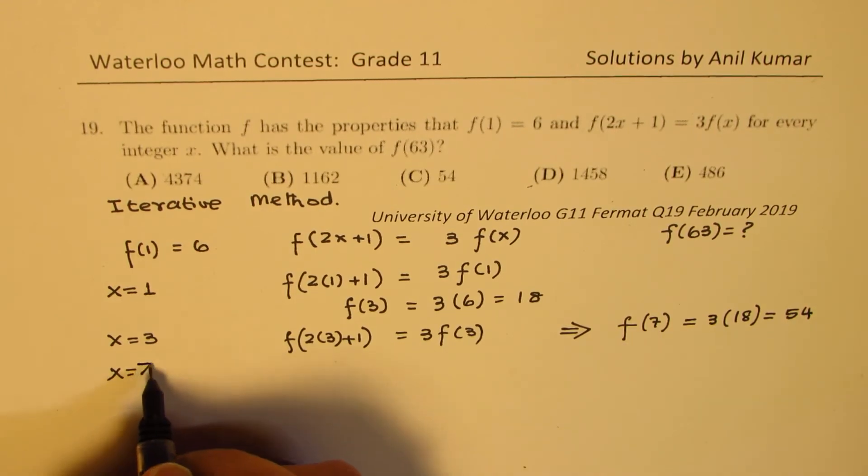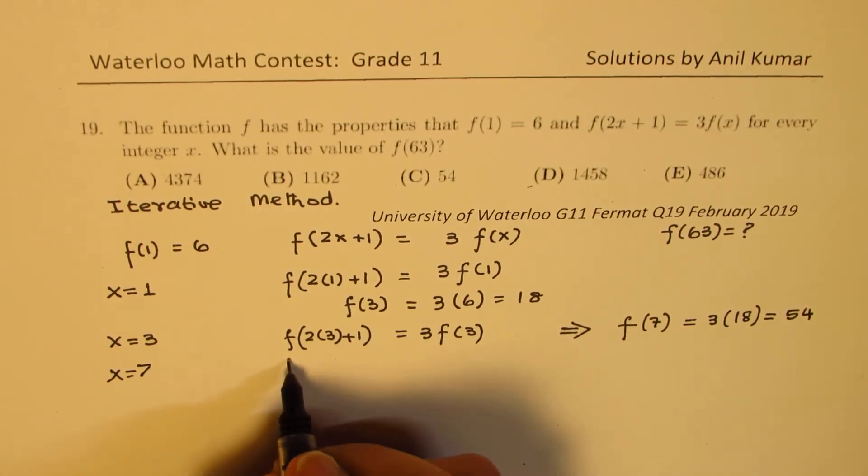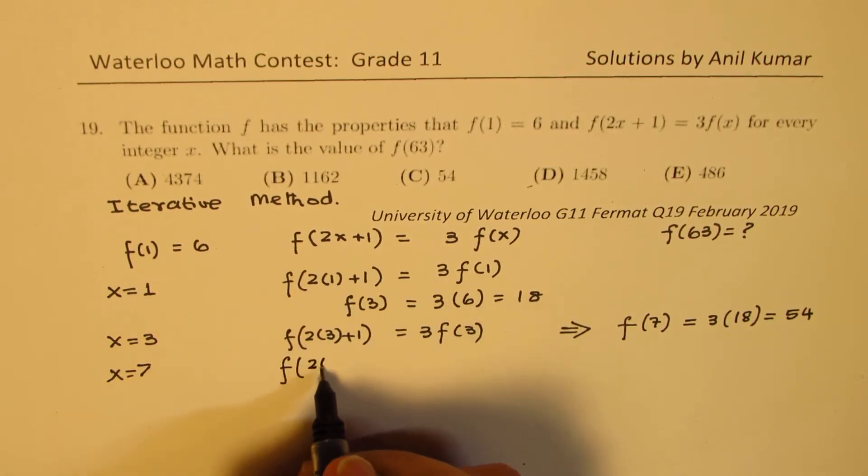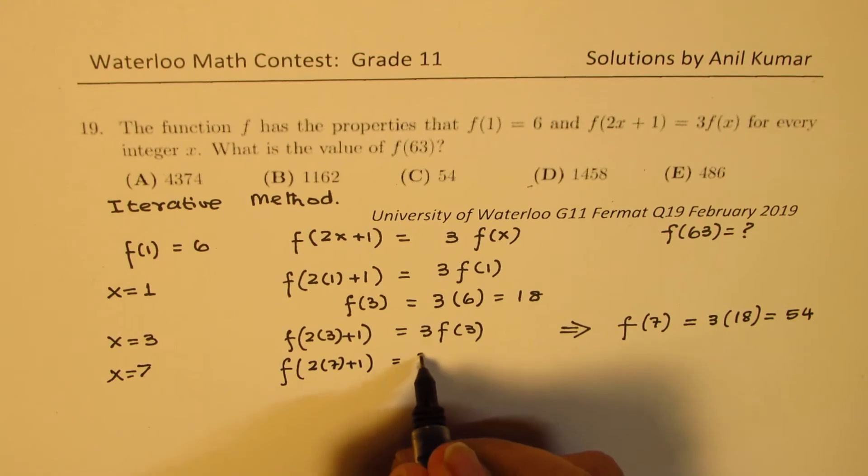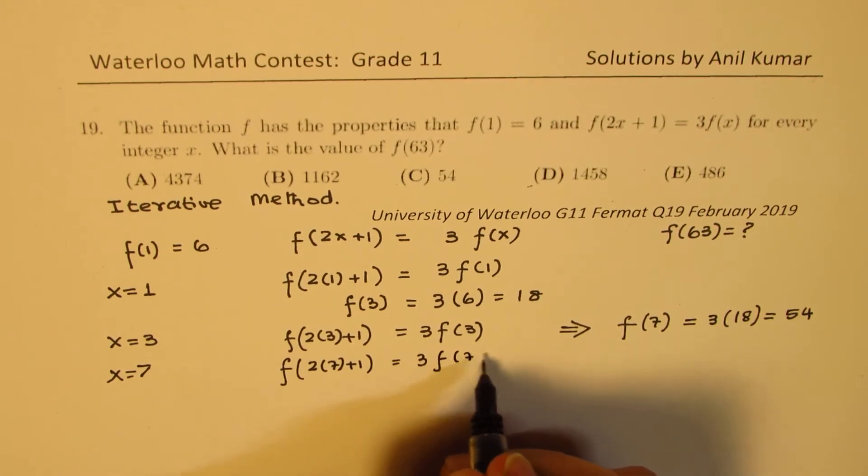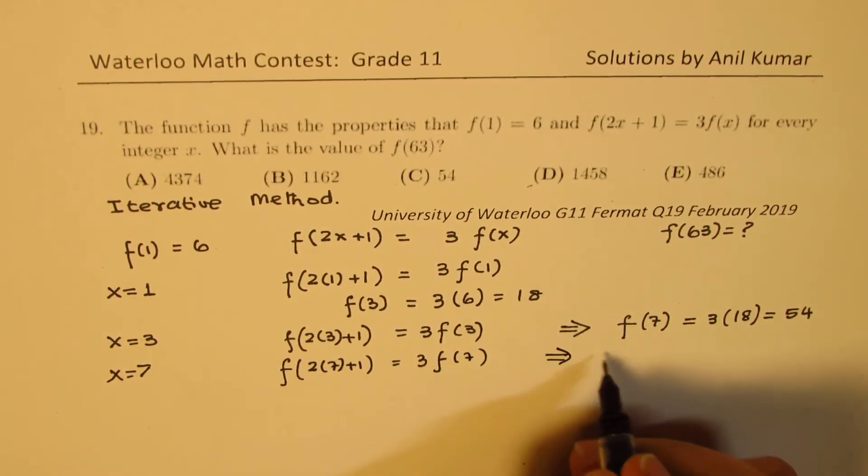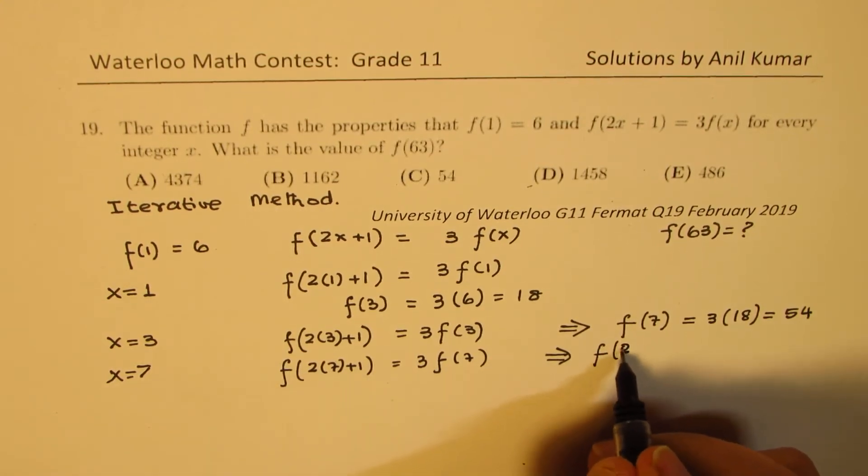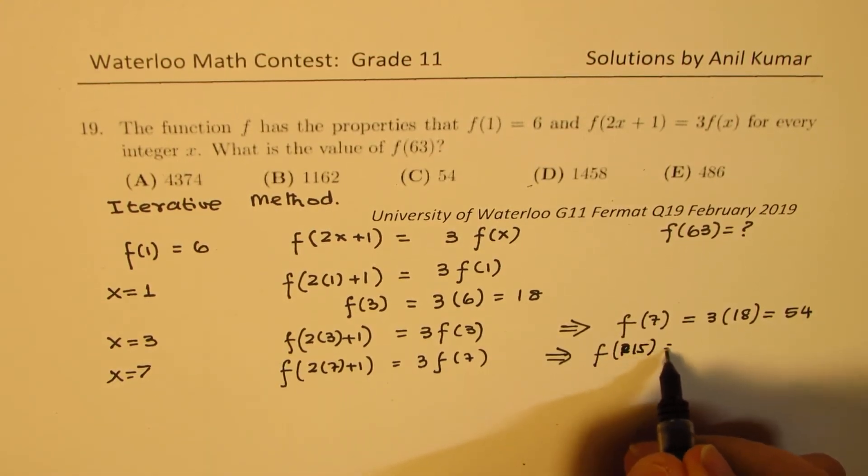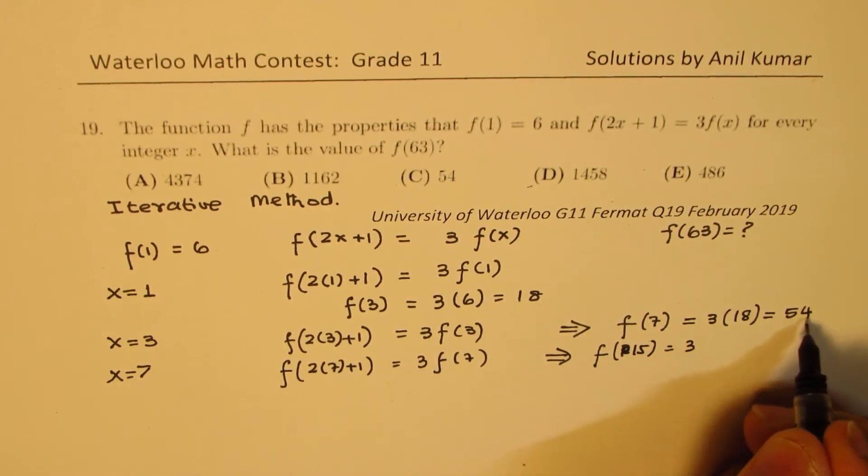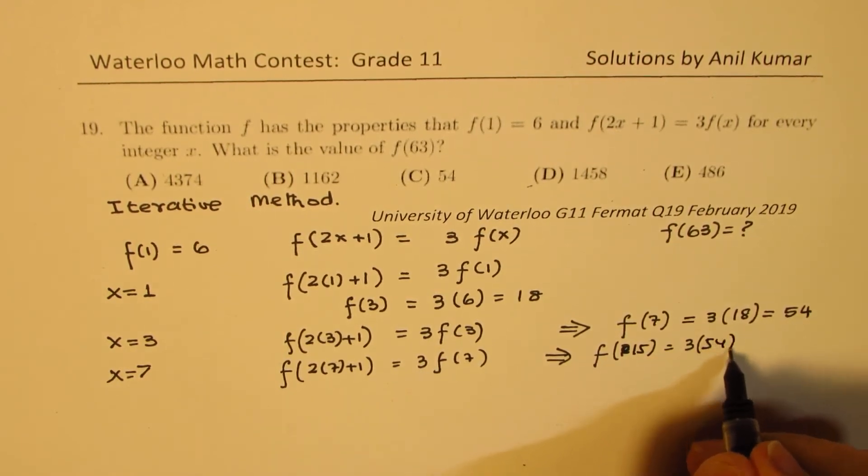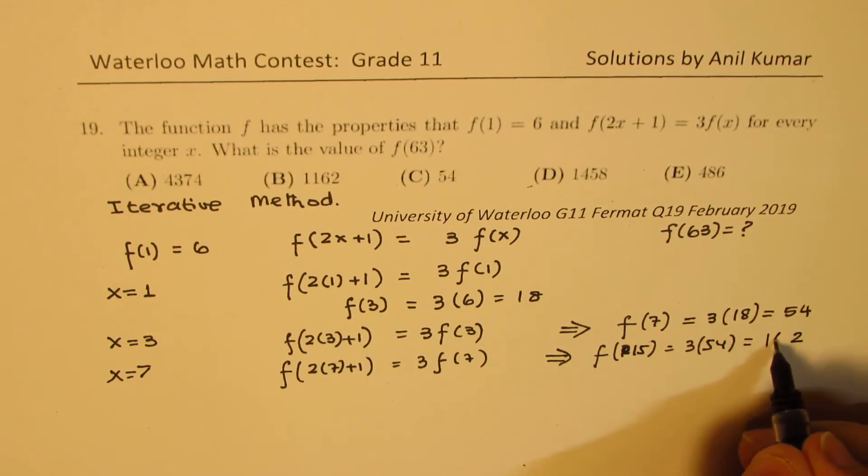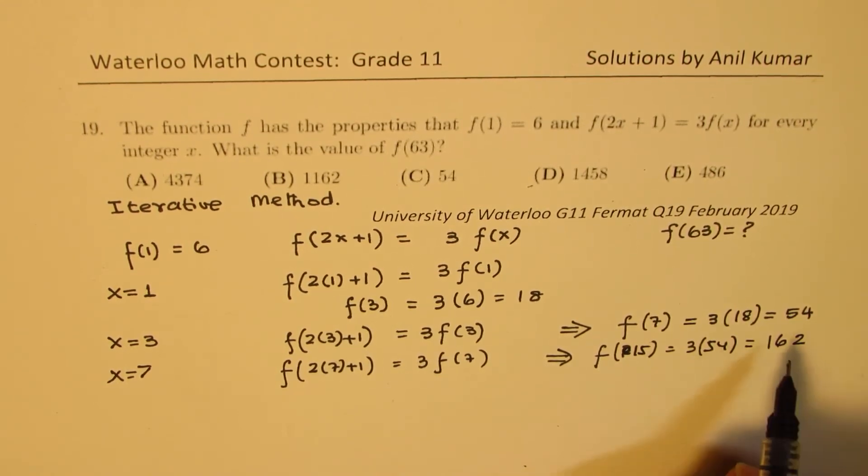That means f(2×7+1) = 3f(7). So that means that we have f(15) = 3×54, which is 3×4 is 12... 162. So we get 162 as the value for f(15).